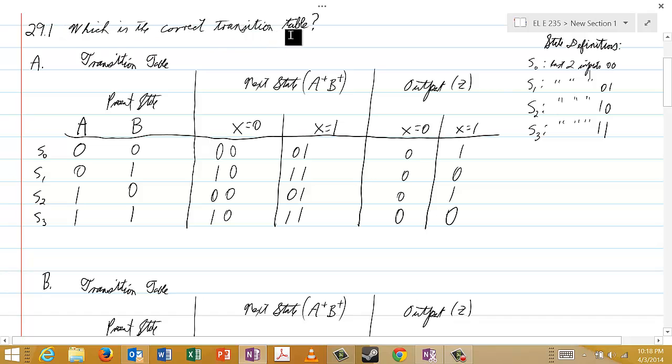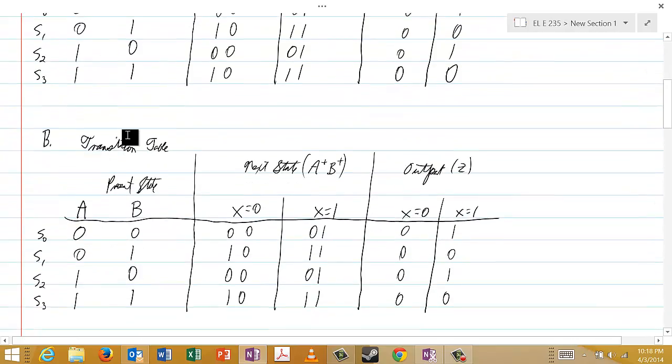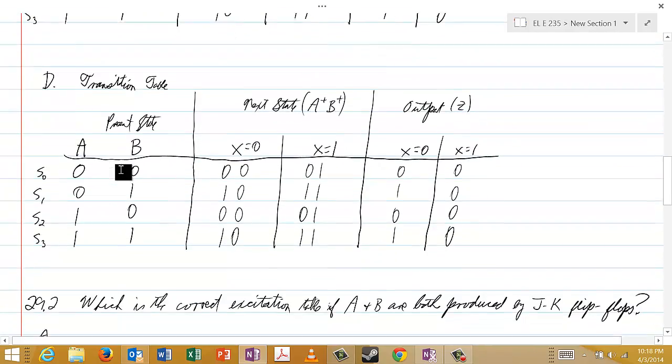And again, you see here in 29.1, you want to identify which is the correct transition table, and you have four possibilities here, A, B, C, and D.